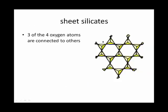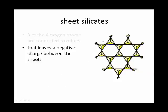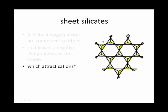So the sheet silicates have three out of every four oxygen atoms connected to others. But that still leaves a negative charge between the sheets, and that's why they will attract cations as well as water.